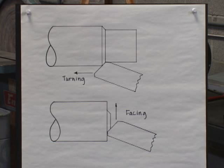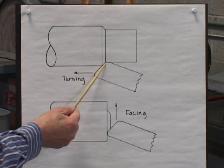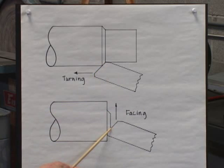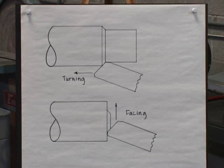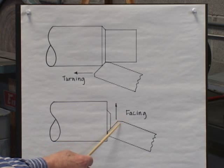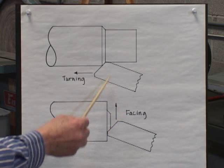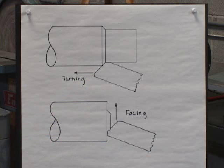You are simply using different ends of the same edge — for turning you're using this portion, for facing you're using this portion. The middle of the edge can conveniently be used to apply a 45 degree chamfer to the work piece. In contrast to the negative lead angle tool, the two other edges are never used and never involved in the actual cut.